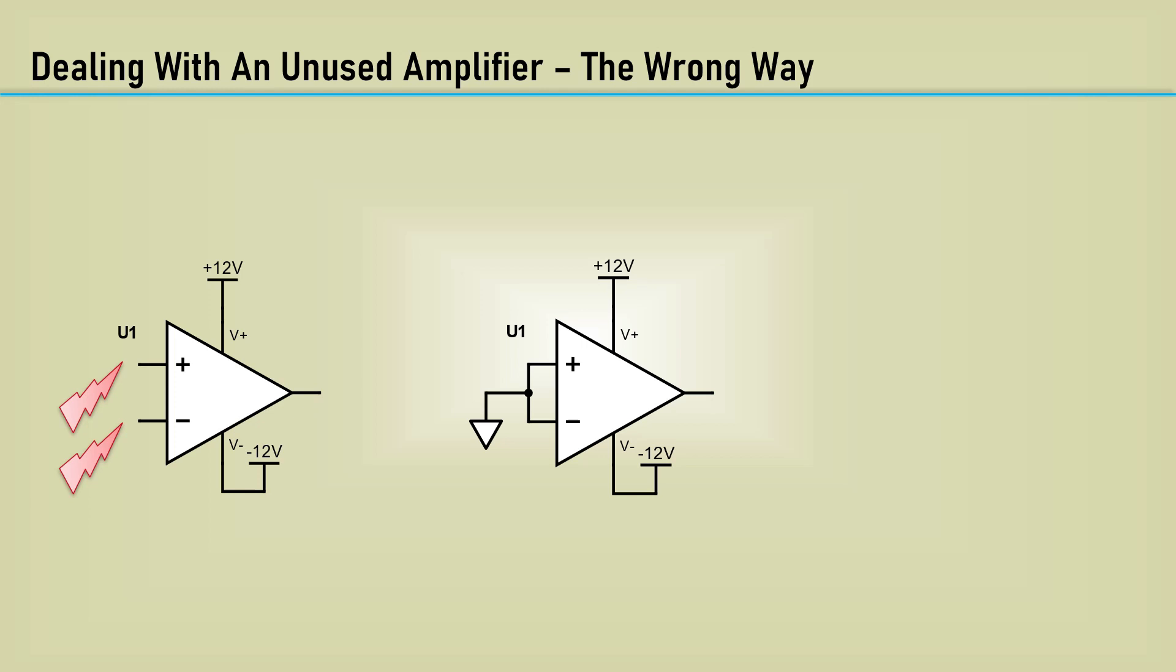Simply grounding the inputs would keep them from being susceptible to noise, but no op-amp has zero input offset voltages, so this guarantees the op-amp will be saturated to one rail or the other. The op-amp is likely to draw more current with the outputs saturated.